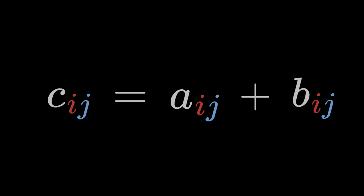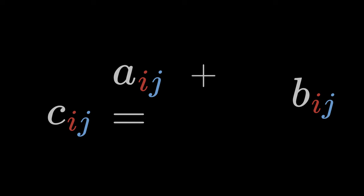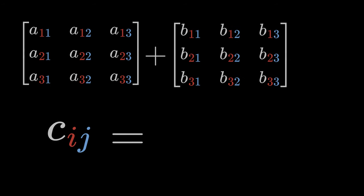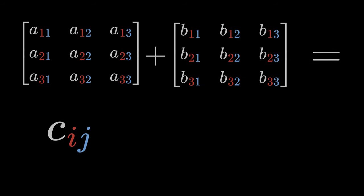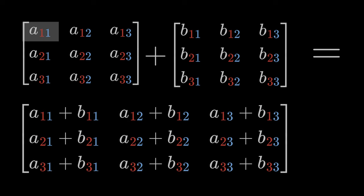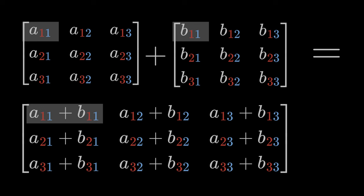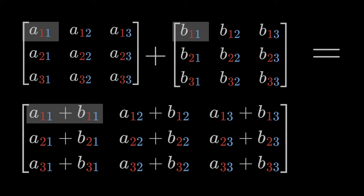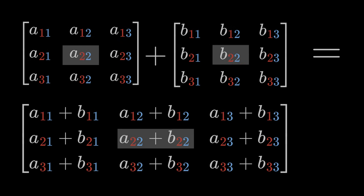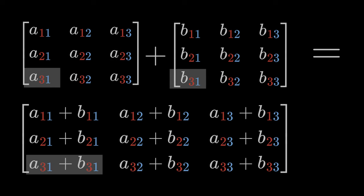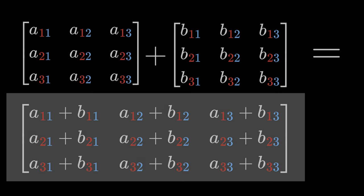If we represent the tensors A and B as matrices, then adding tensors is adding matrices component by component. The component A11 of matrix A in the first row and first column is added to component B11 of matrix B, which is also in the same column and row. The result is A11 plus B11 in the first column and first row of the resulting matrix. This is how matrix addition works. We proceed in the same way with all other components. The result is the matrix C.